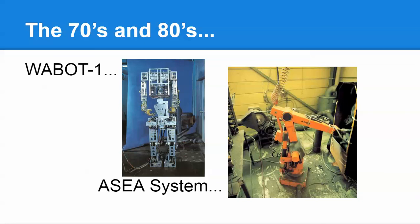We're still in robotic infancy from a modern standpoint, but we had some creative individuals. At Waseda University from 1970 to 1973, they created the Wabot-1 — the very first anthropomorphic robot, which is a robot that has human features. This was different from the earlier automata and automatons, as it would be much more complex with its actuation systems and interaction with the world around it.